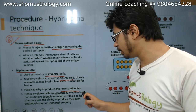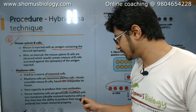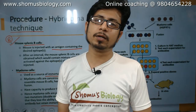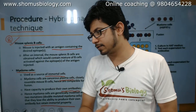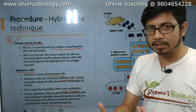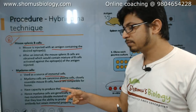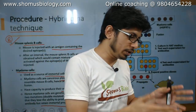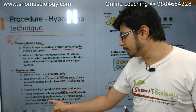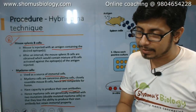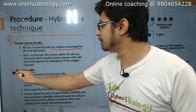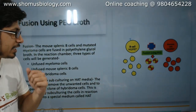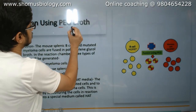Myeloma cells are genetically modified with two mutations — known as double mutated myeloma cells — so that they lose the ability to produce their own antibodies but retain the immortal property. By default, myeloma cells resemble plasma cells and can produce their own antibodies and generally don't die. So we incorporate two specific mutations so that they lack the capability of producing antibodies, but they should not lose the capability of living. Normal spleen B cells and these mutated myeloma cells are then collected. The fusion of both cells is performed in the presence of polyethylene glycol broth.